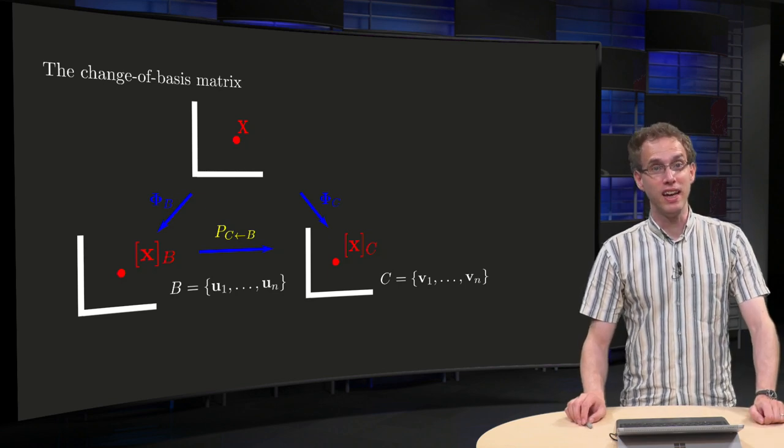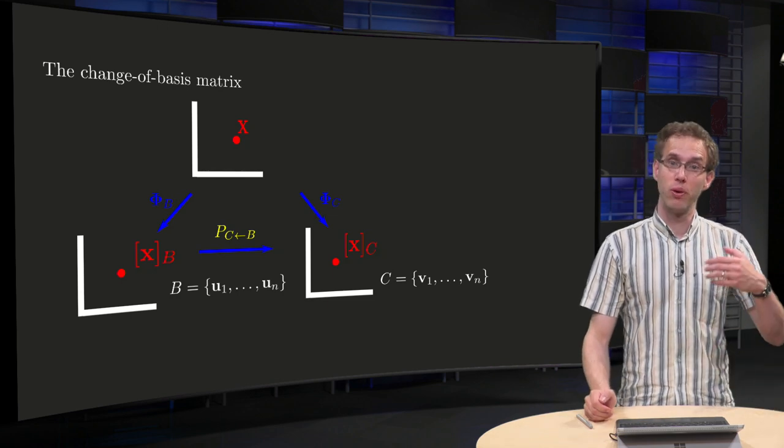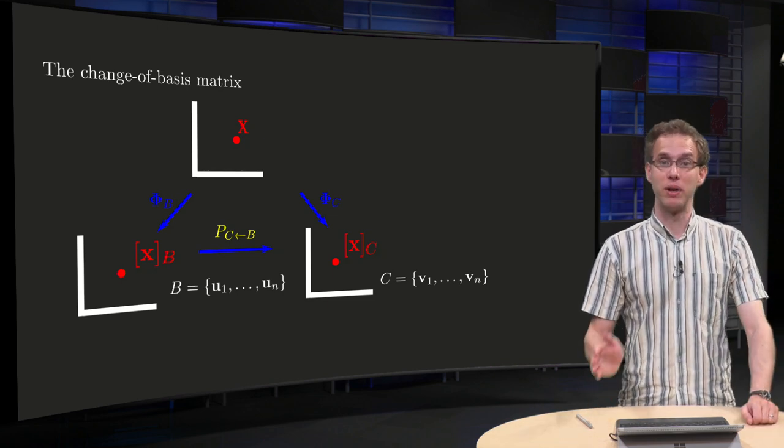If you have the coordinate vector x_B in R^n, you do not need the vector x to compute the coordinate vector x_C in R^n. You can do this directly.